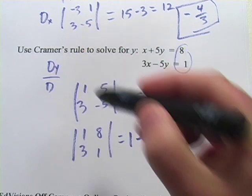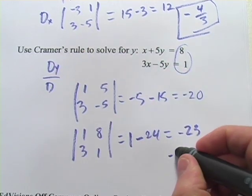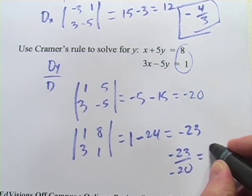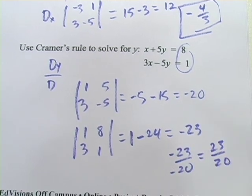And now we have D_y over D. So we get negative 23 over negative 20, or 23 twentieths.